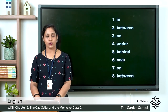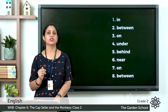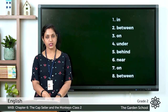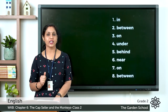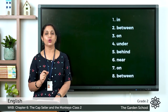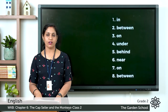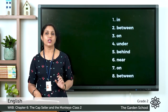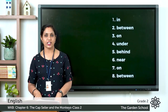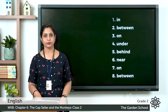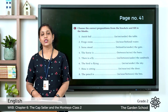(5) I stood in line behind Mina — 'behind' shows the position, so underline 'behind.' (6) Suman stood near the boat — the preposition is 'near.' (7) The bee is sitting on the flower — 'on' is the preposition. (8) There is a chair between the bed and the table — 'between' is the preposition.